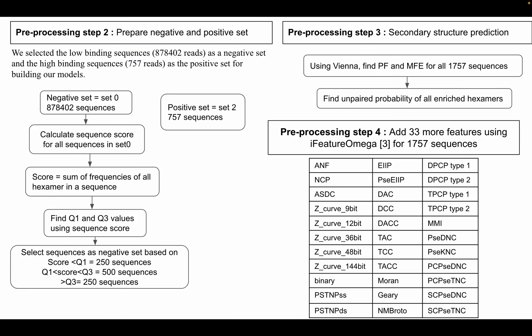We selected set zero as the negative set and set two as the positive set. As the data was imbalanced, we calculated sequence scores for all reads from set zero, and based on these scores we selected one thousand sequences. To predict secondary structure, we calculated partition function (PF) and minimum free energy (MFE) values for all reads using RNAfold, and unpaired probability of all enriched hexamers. In addition, we calculated 33 sequence features using iFeature Omega.